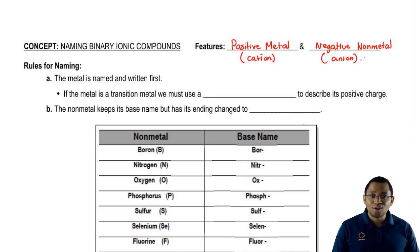There's a system for naming. Remember, we say it's called nomenclature. For binary ionic compounds, the rules go as follows.